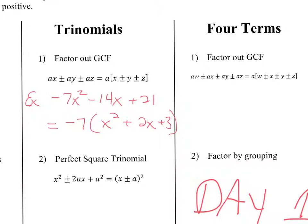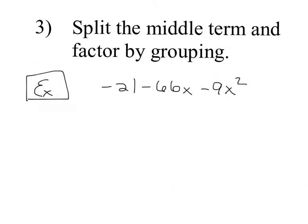We're going to jump down to splitting the middle term and factoring by grouping. We can't forget the pre-steps, which is to write the terms in descending order with respect to the exponents. So the x² term should be first, the x to the first power next, and the x to the zero last.